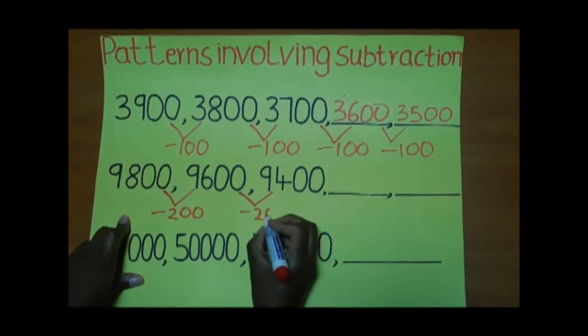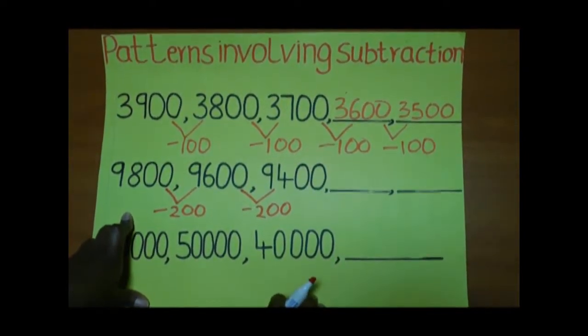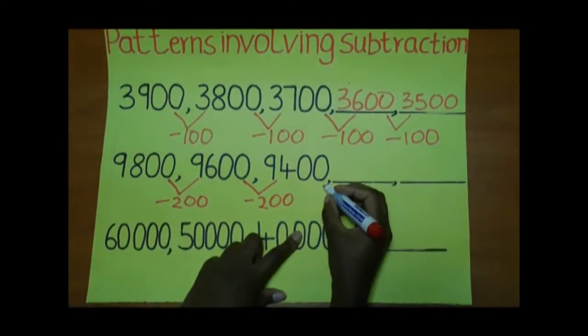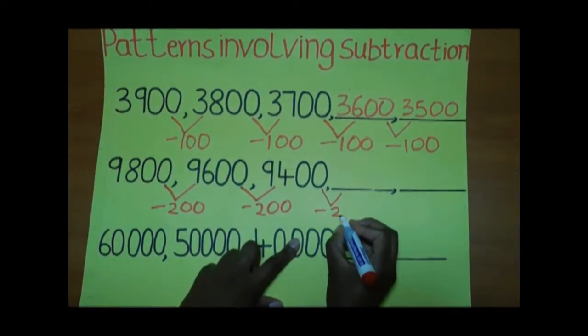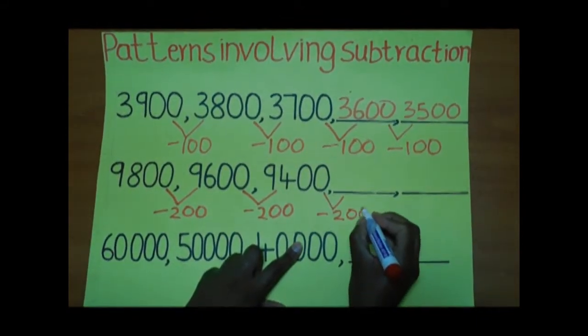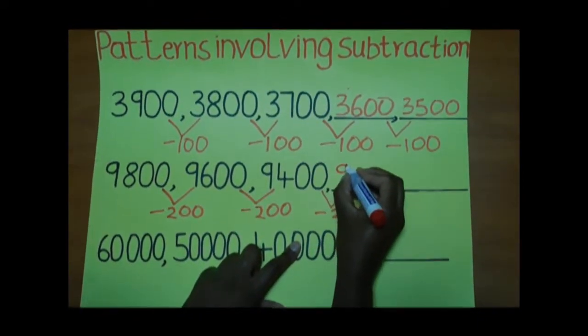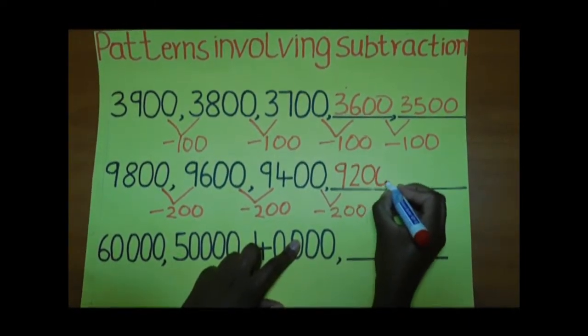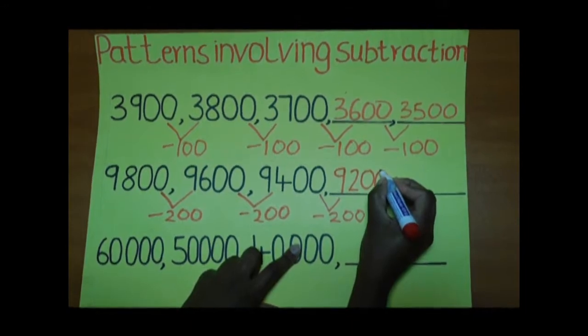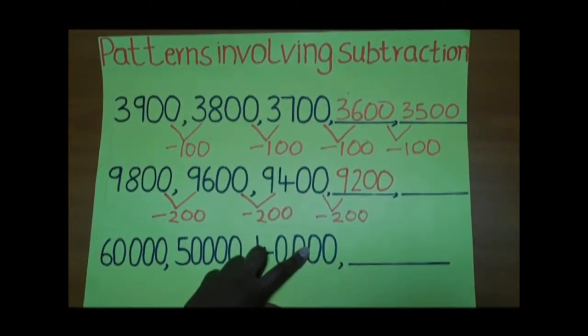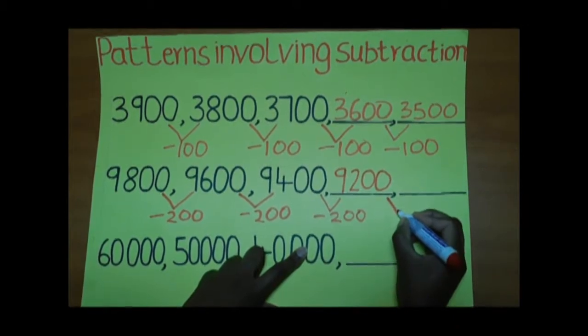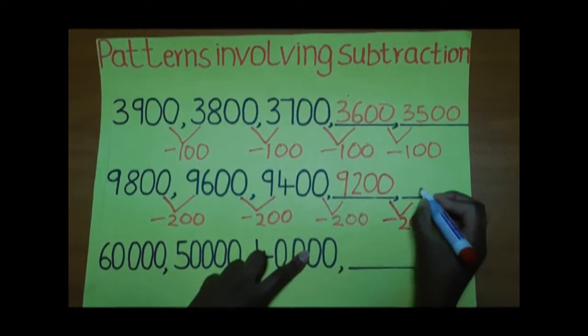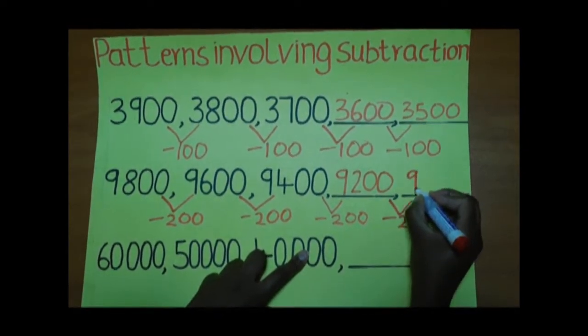Therefore, to get the missing number here, we are going to subtract 200 from 9400 to get 9200. To get the next missing number, we are going to subtract 200 from 9200 to get 9000.